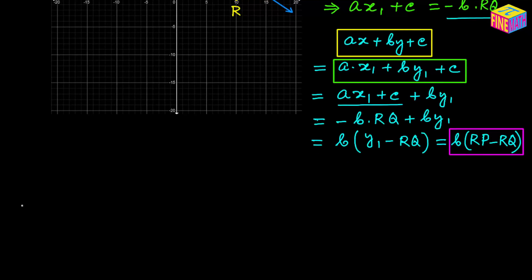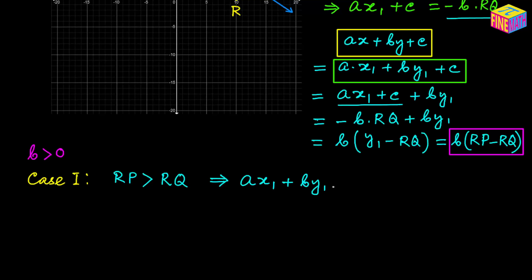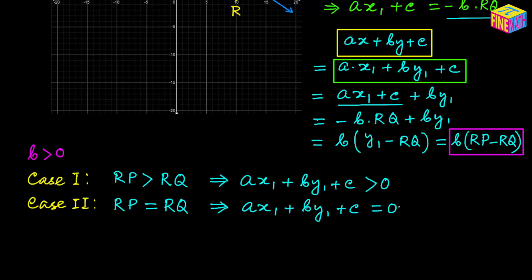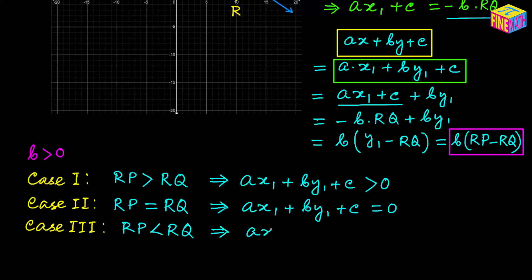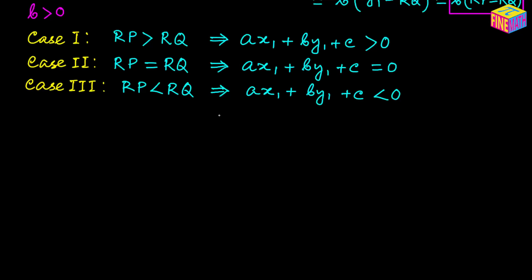Assuming b is a positive number, we have three cases. Case 1: if RP is greater than RQ, then the expression ax₁ plus by₁ plus c is greater than zero. Case 2: if RP equals RQ, then the expression equals zero, meaning P lies on the straight line. Case 3: if RP is less than RQ, then the value of the expression is negative. So depending on P's location, the expression is positive, zero, or negative.